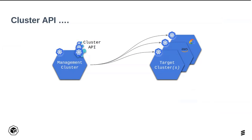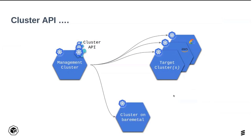Once you have the bootstrap cluster up and running with all the Cluster API components and controllers, you can start creating your target cluster in your desired cloud environment — whether it's GCP, AWS, Azure, Digital Ocean, or others. What we did with Metal Cube is extend the list of infrastructure providers by adding the Cluster API infrastructure provider for bare metal, so Metal Cube allows you to do cluster management on real bare metal servers.